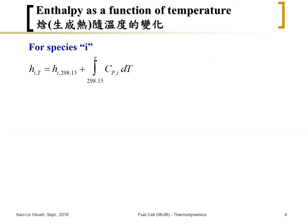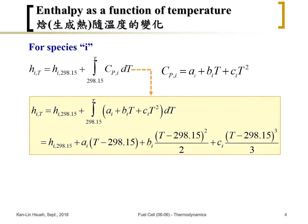Before doing that, let's look at how the enthalpy of a single species i changes as a function of temperature. This can be obtained by integrating the specific heat of that species, which can typically be found in thermodynamic tables. The specific heat is expressed as a polynomial function of temperature, with coefficients Ai, Bi, and Ci. You can find those coefficients in the table, substitute them into the equation, integrate, and get the enthalpy of species i at any other temperature.